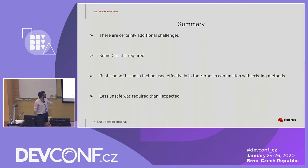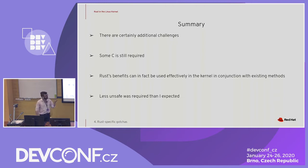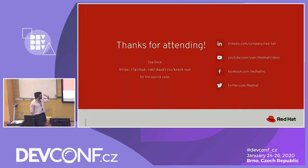In summary, there definitely are going to be some additional challenges using Rust, and some C is definitely still required. But Rust's benefits really can be used effectively in the kernel — we can get a lot of things for free in terms of resource management and cleanup without really a performance hit. And ultimately there was a whole lot less unsafe than I thought was initially going to be required. Here is the link for my source code if you want to take a look.